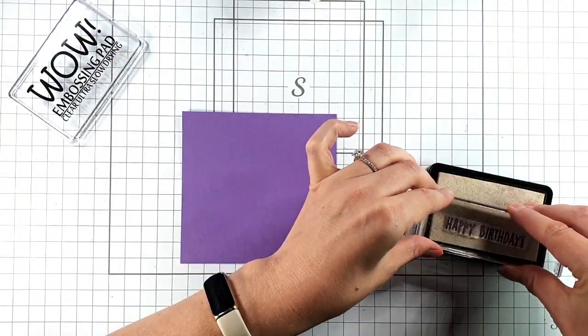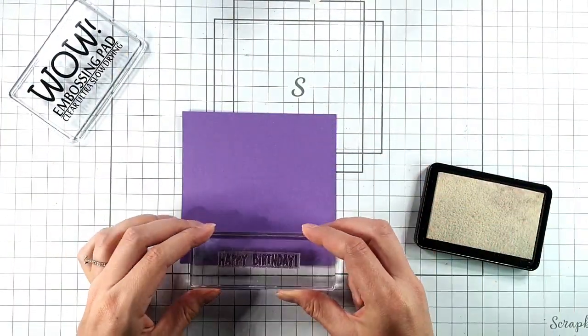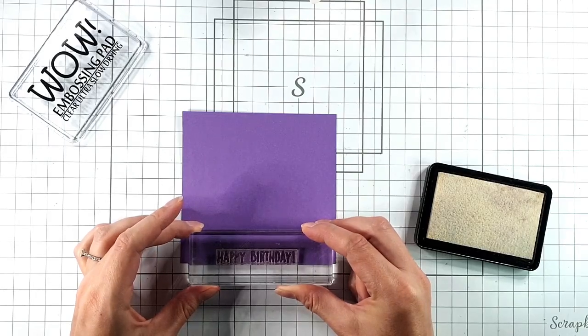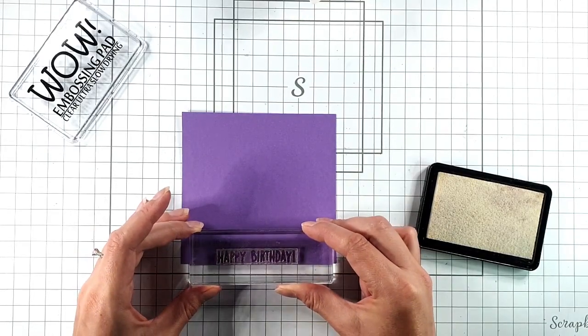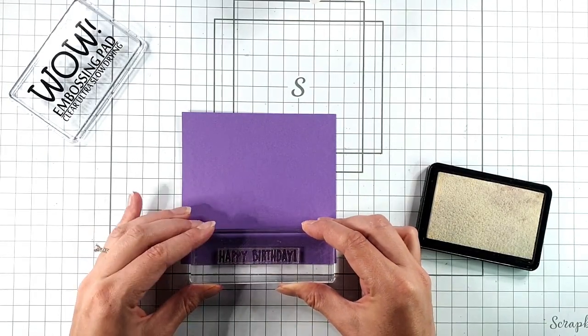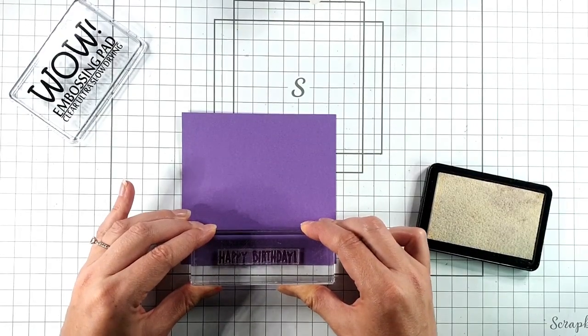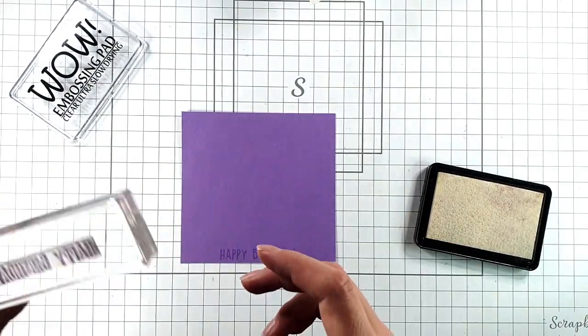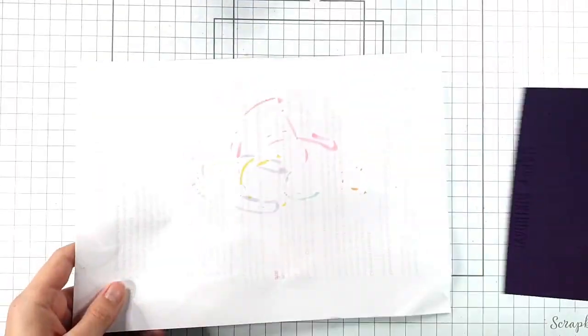Then I'm also going to heat emboss my sentiment. I'm heat embossing this onto a piece of purple cardstock that's the same purple as the piece that we built our circuit onto. I'm going to heat emboss that in white as well.